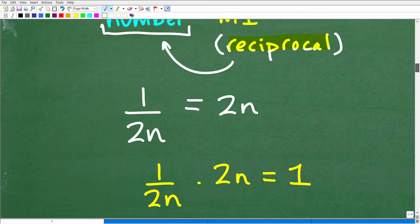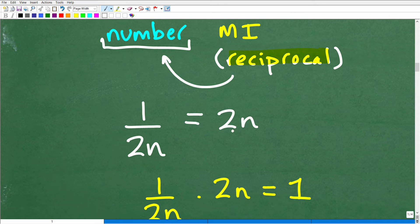And we'll be able to determine what that value is of that number. Of course, we could do this very easily because here is 2n or 2n over 1. So when you flip this upside down, the reciprocal is going to be 1 over 2n.